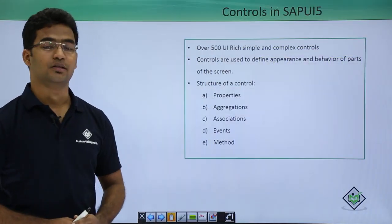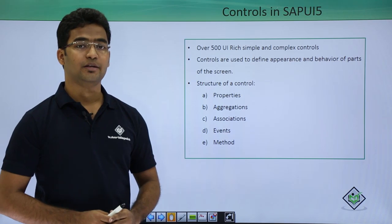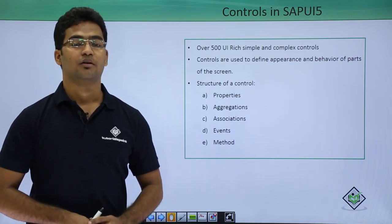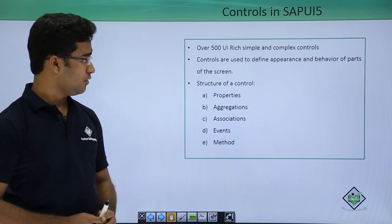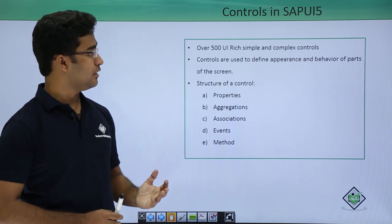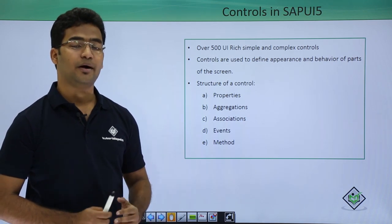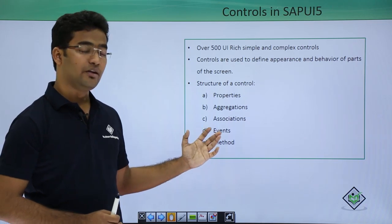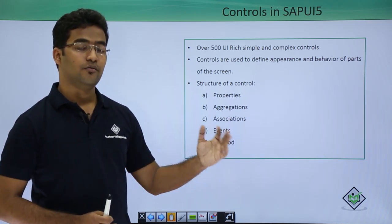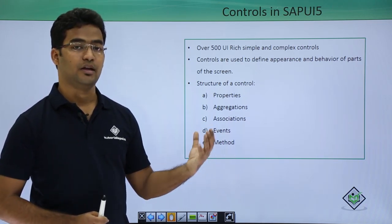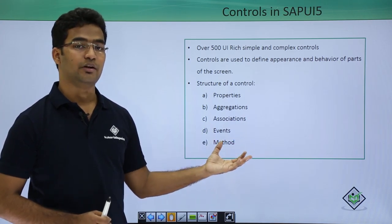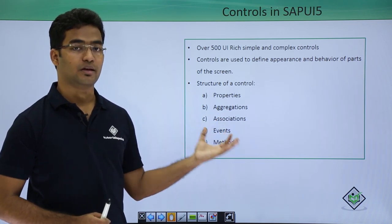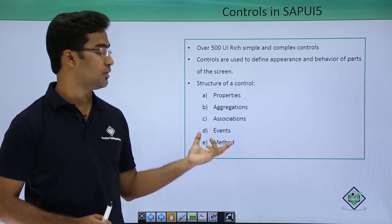Now let us just discuss the controls in SAPUI5. As I already mentioned there are more than 500 controls — both simple and complex controls in SAPUI5 which are supported. Controls are basically used to define the appearance and the behavior of the parts of the screen. Basically we define a control using the prefix of the namespace. If we are using the button control we will define the namespace before it, that is sap.m — sap.m is basically the library and it is the namespace acting here.